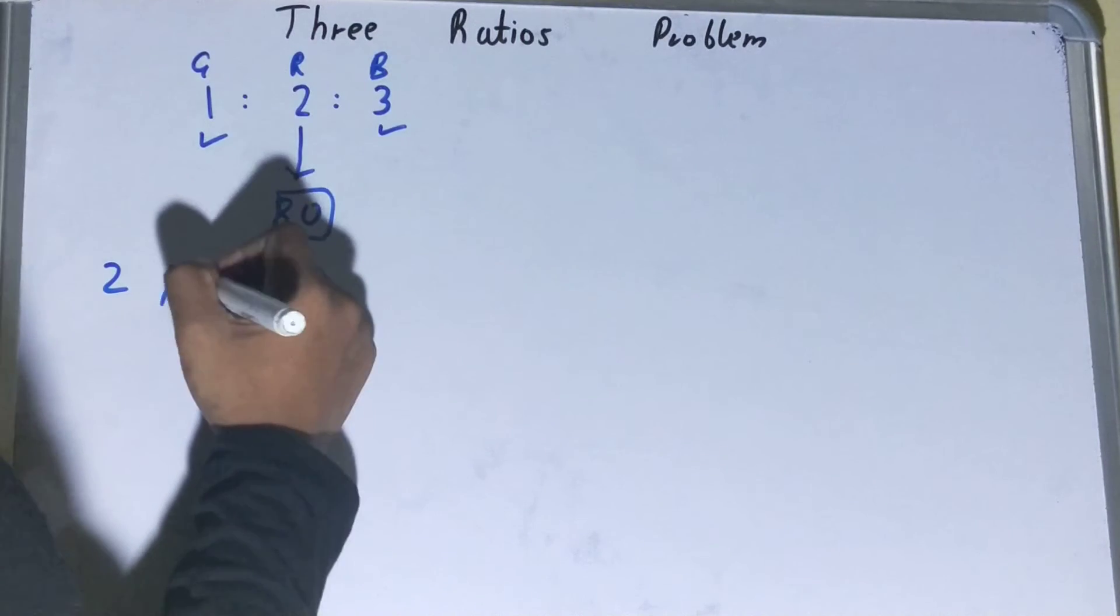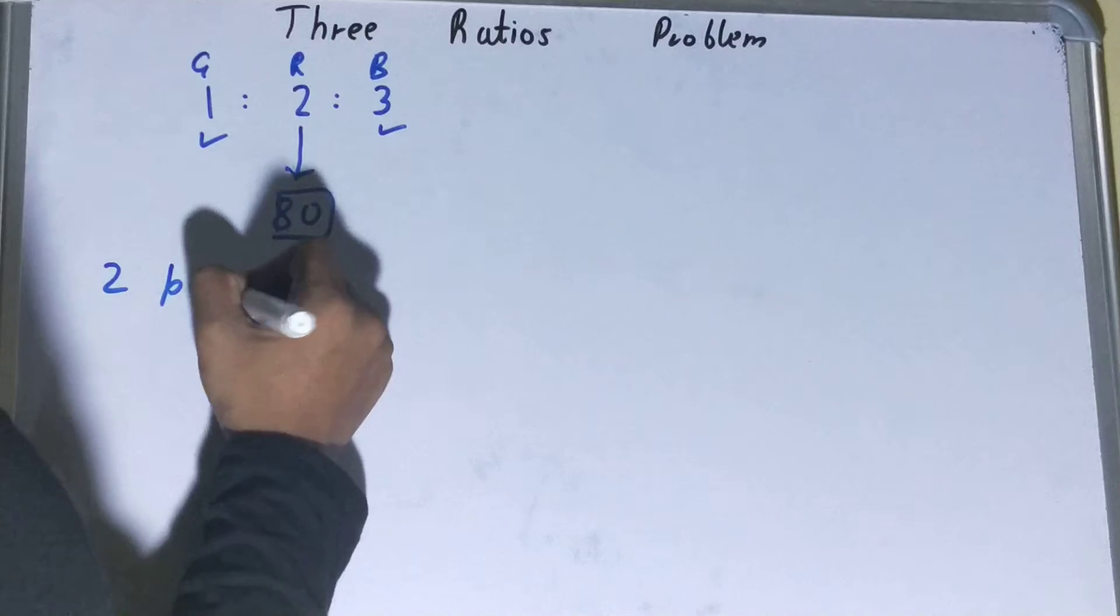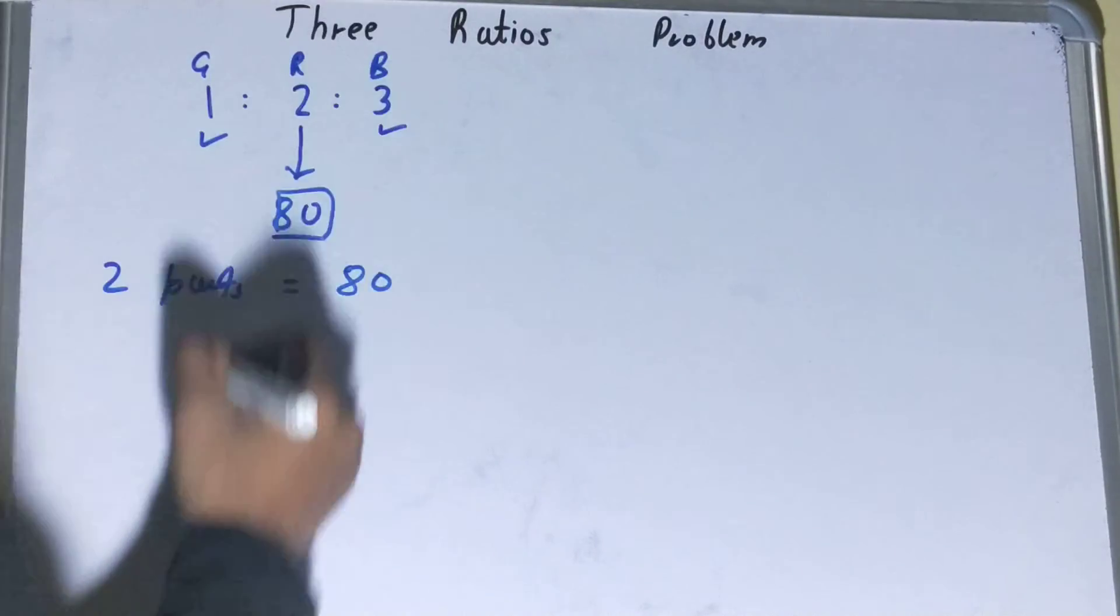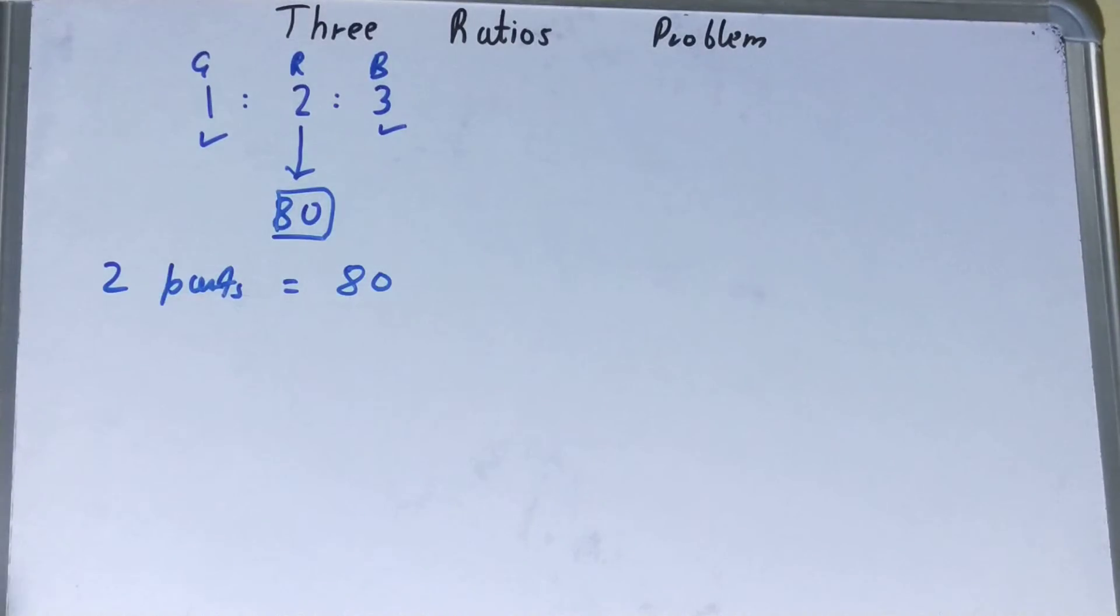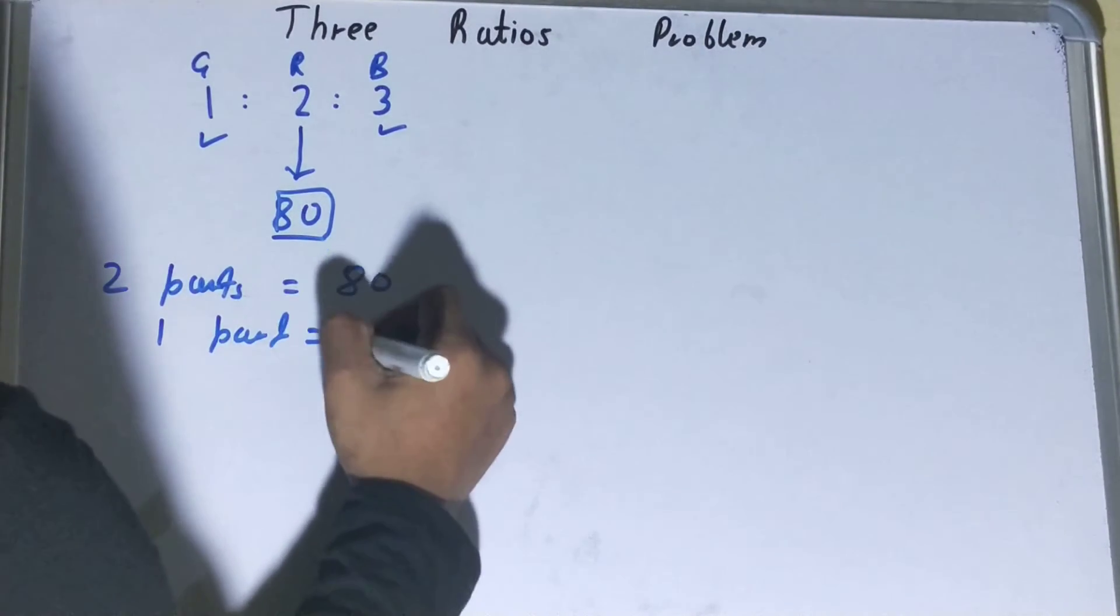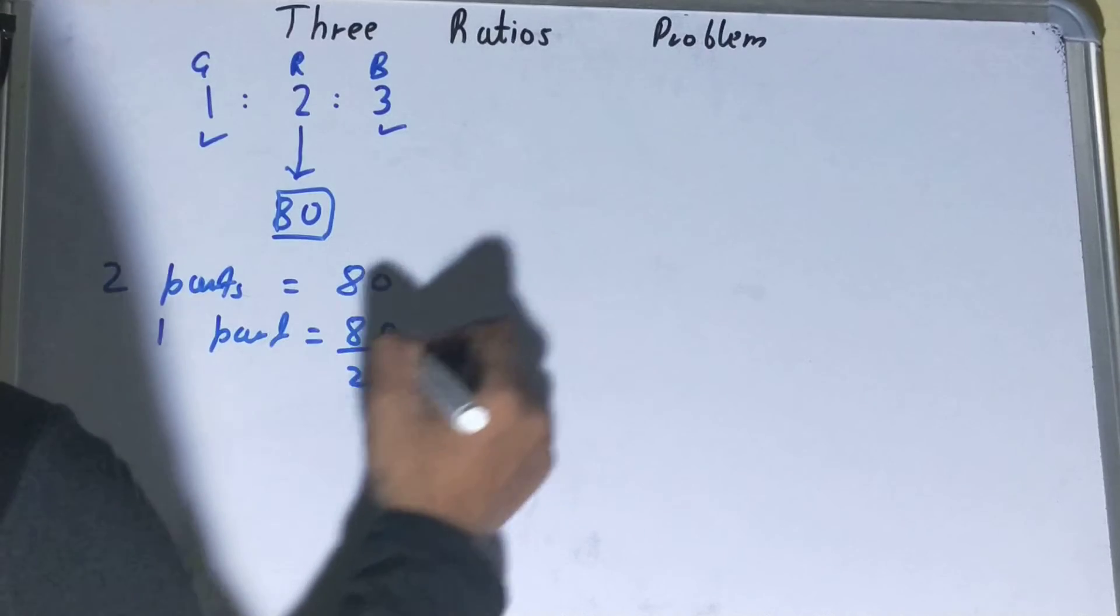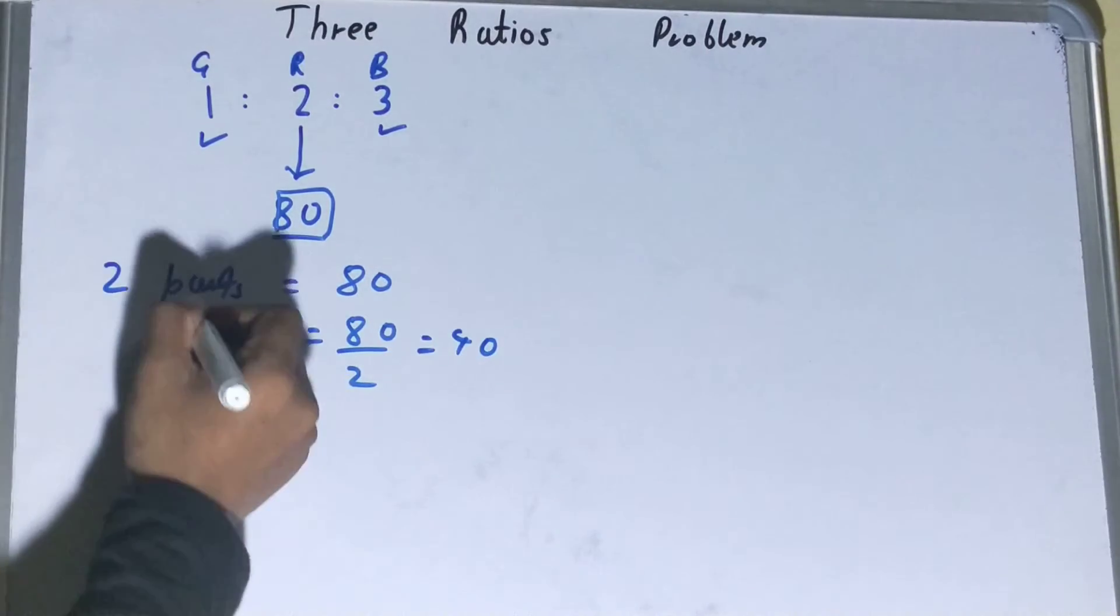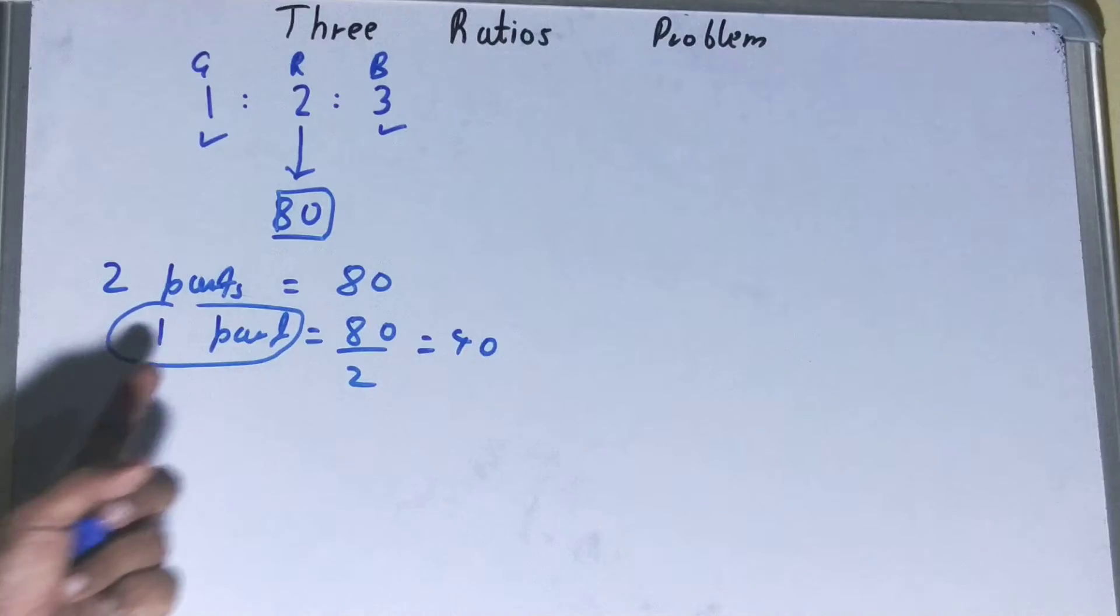Two parts equals 80, because I am having the value of two parts in the ratio, right? So one part will be 80 upon 2, which will be 40. Right, now see from here we will find out one part value is 40.